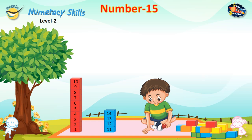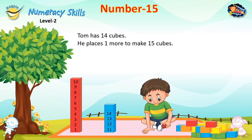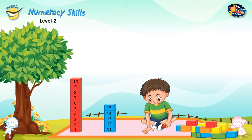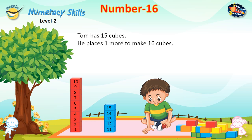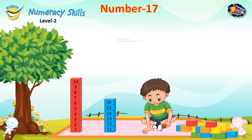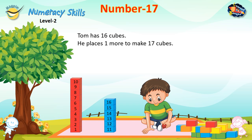Number 15: Tom has 14 cubes, he places one more to make 15 cubes. Number 16: Tom has 15 cubes, he places one more to make 16 cubes. Number 17: Tom has 16 cubes, he places one more to make 17 cubes.